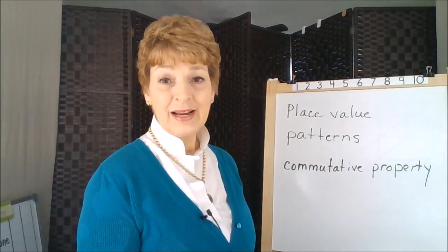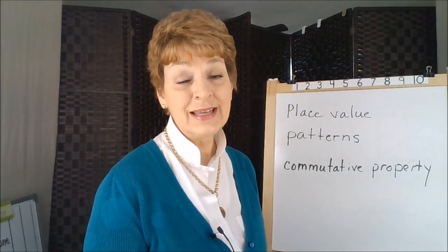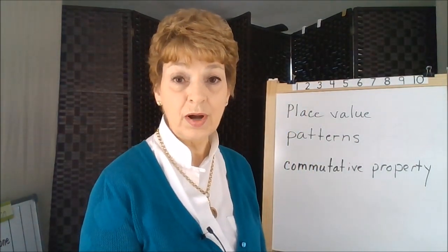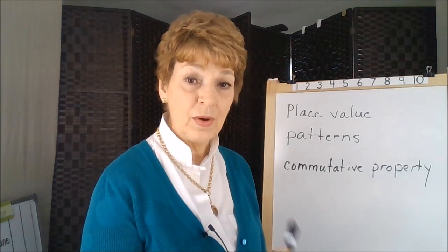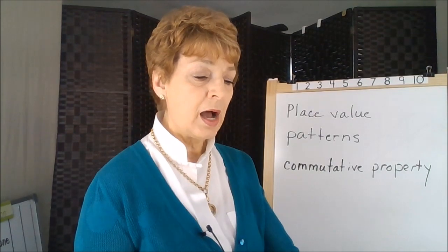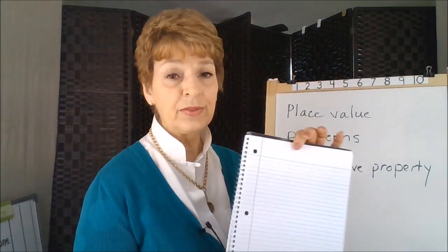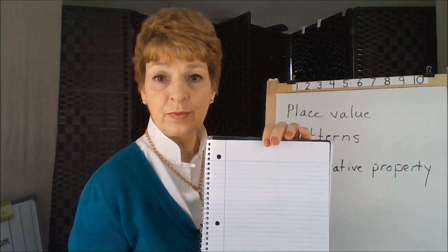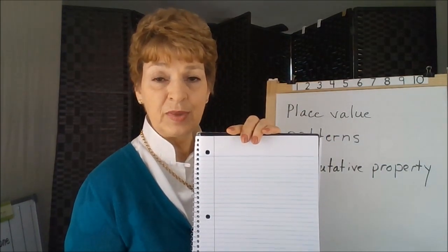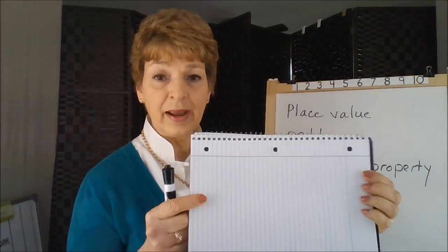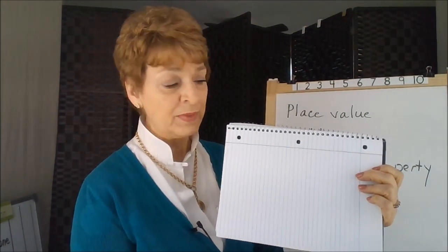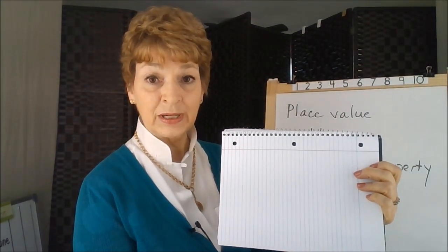Place value is really your child keeping his or her numbers in the correct columns — whether it be the ones column, the tens column, the hundreds column, and so forth — while doing the work. A child who has trouble keeping their columns straight could easily take their work paper and turn it sideways, so the lines of the notebook paper are actually showing the columns more clearly.